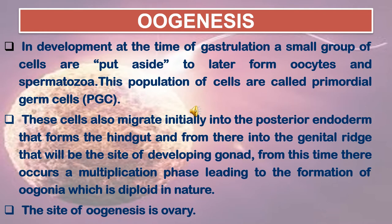In development, at the time of gastrulation, a small group of cells are set aside to later form ova and spermatozoa. This population of cells is called primordial germ cells. These cells migrate to the gonadogenesis region, initially into the posterior endoderm that forms behind the gut, and from there into the gonadal ridge that will be the site of the developing gonad. From this time, a multiplication phase occurs leading to the formation of oogonia, which are diploid in nature. The site of oogenesis is the ovaries.